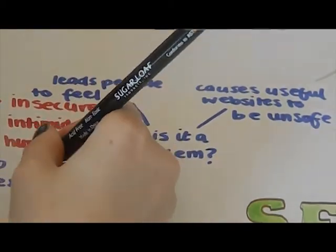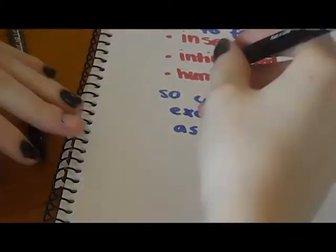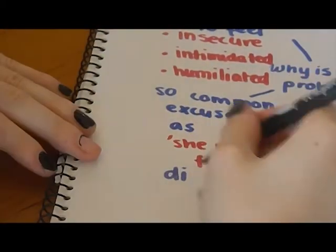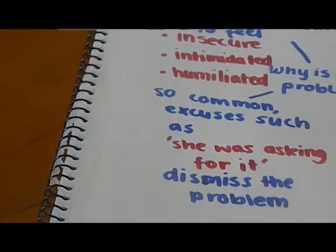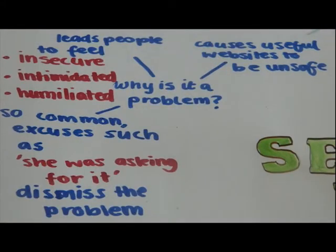It happens so often that commonly, excuses such as, she should not have posted that picture showing provocative clothing and, she was asking for it, dismiss the problem rather than addressing it. This approach means women aren't taken seriously and it's often difficult to report the problem.